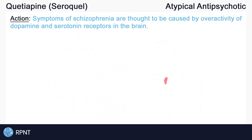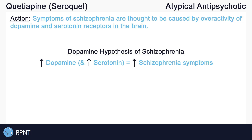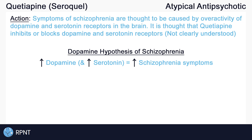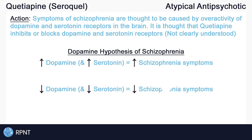These symptoms of schizophrenia and other mood disorders are thought to be caused by overactivity of different neurotransmitters in the brain, mainly dopamine and serotonin. So, more dopamine and more serotonin means more symptoms. It is thought that quetiapine works by inhibiting dopamine and serotonin receptors, thereby reducing the symptoms of schizophrenia and other behavioral problems. But keep in mind that schizophrenia and quetiapine are still not completely understood.